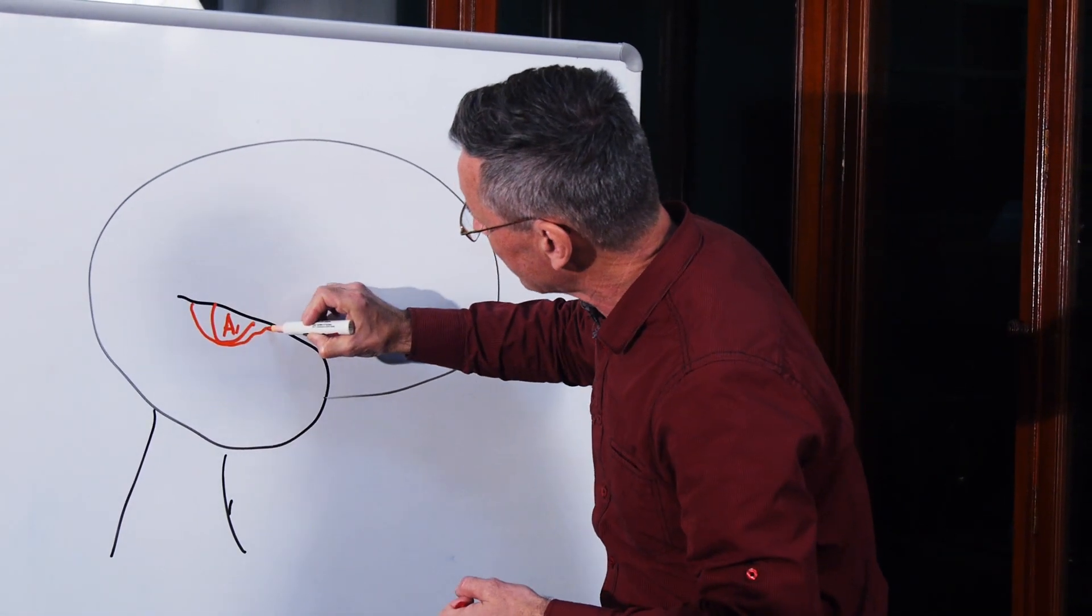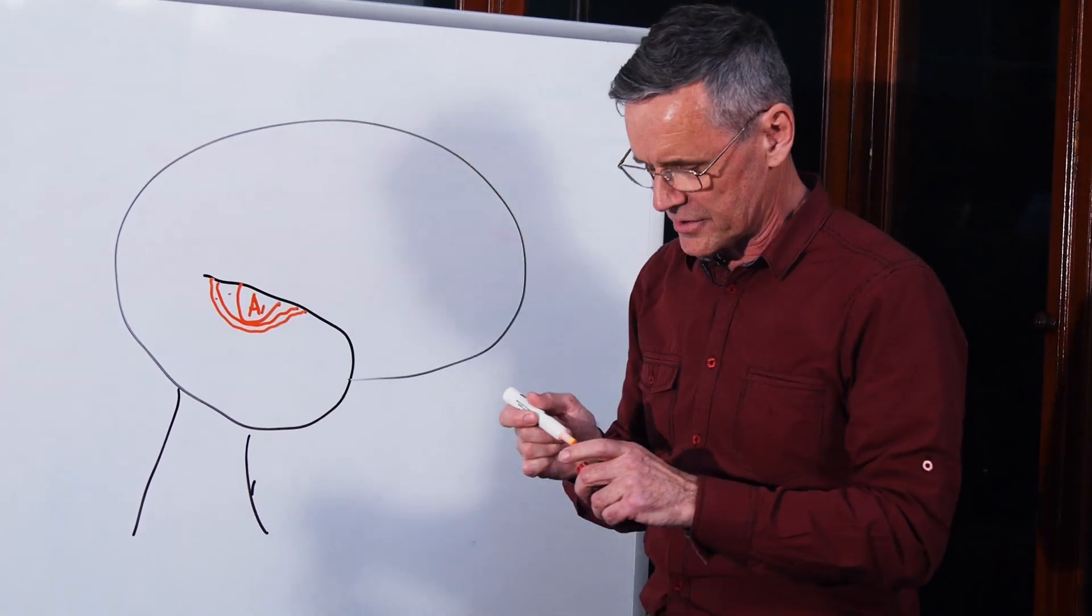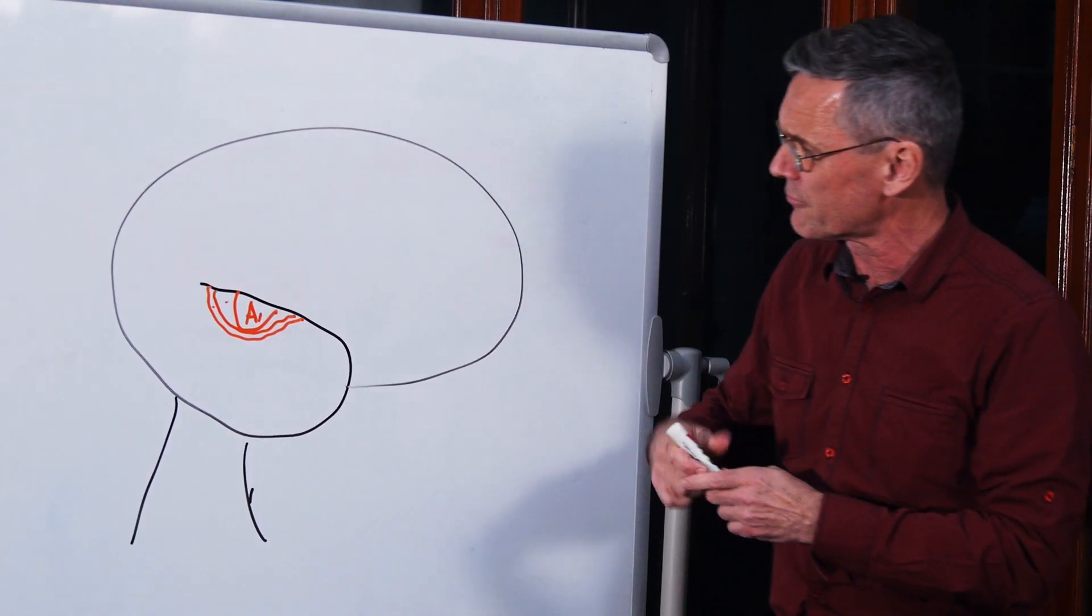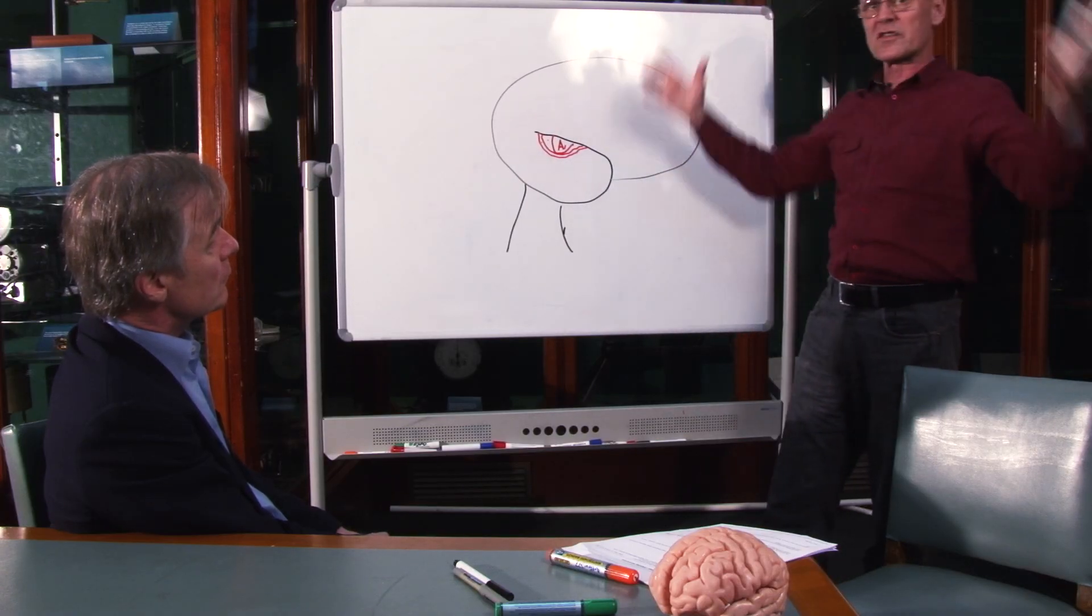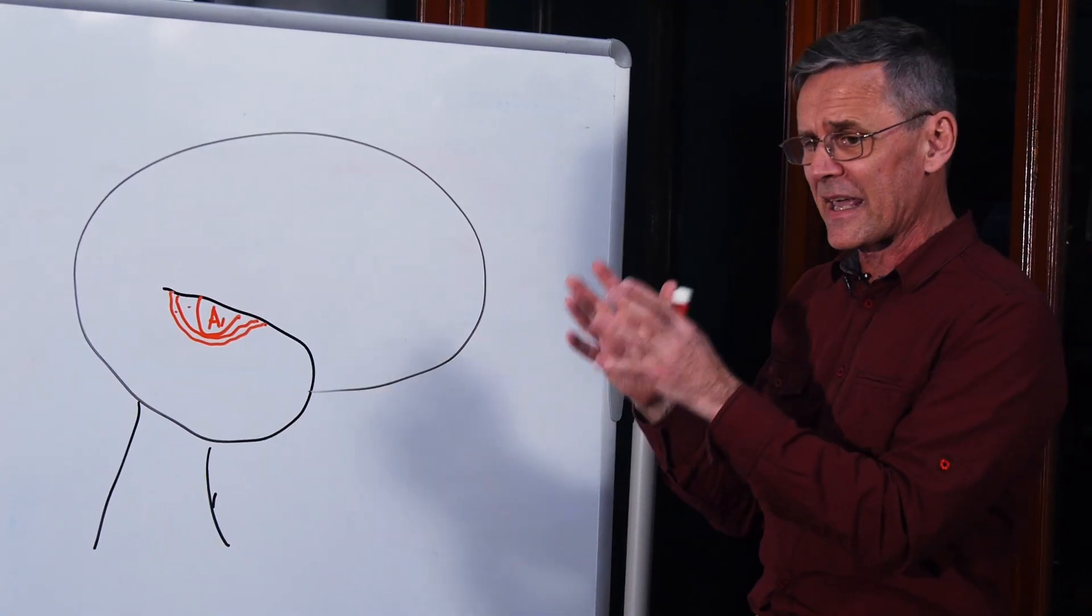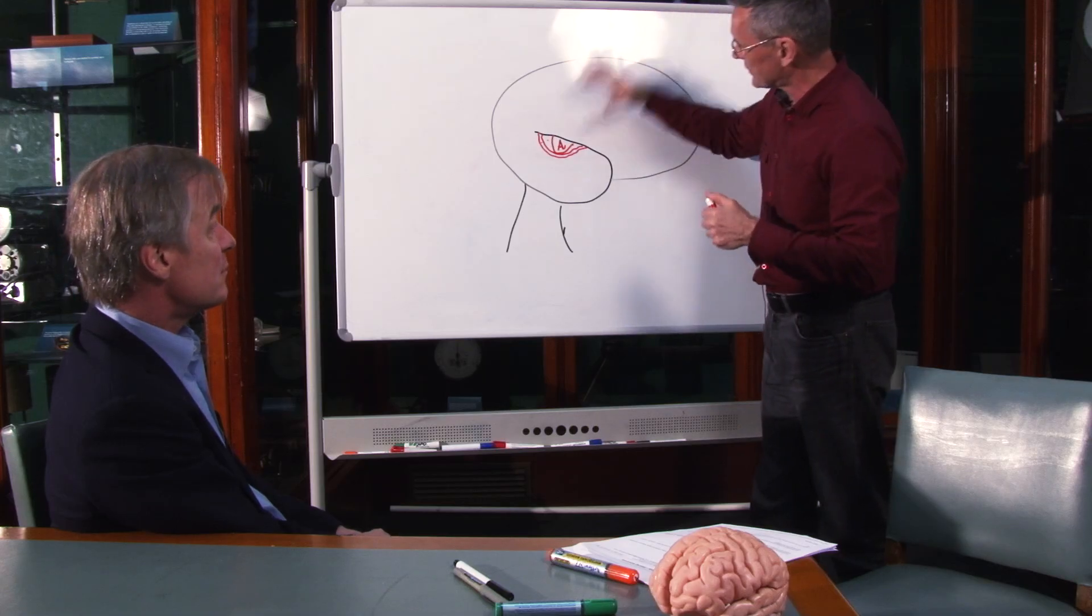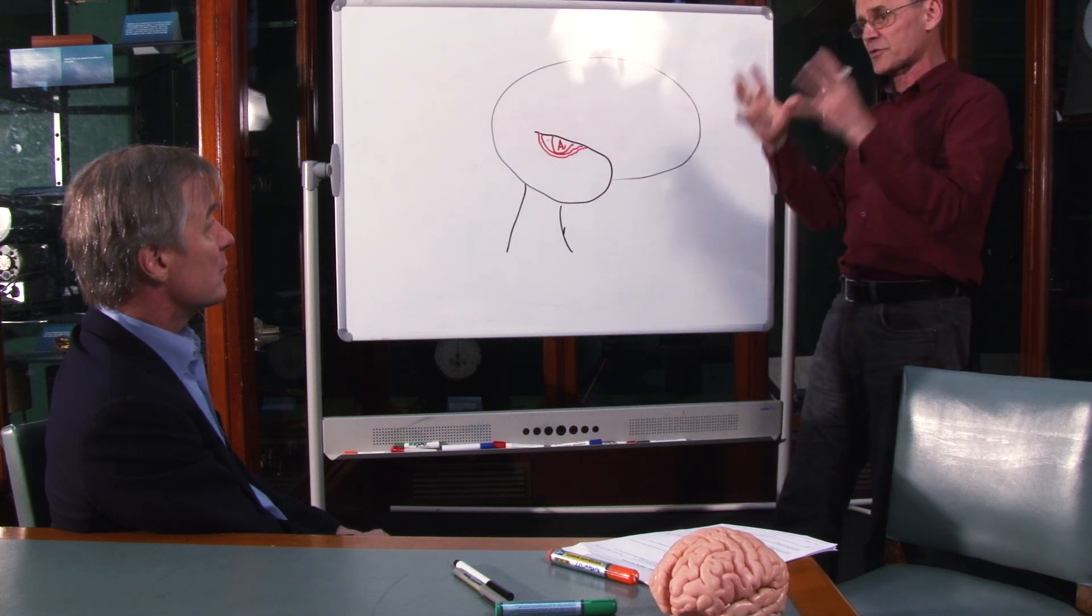When you start moving outside auditory cortex, to what are referred to as the belt and parabelt regions, something magical really begins to happen in that this representation of the acoustic space starts to become pared down to the things that you want to focus your attention on. So the top-down endogenous action of attention sharpens up the imagery of the perceptual objects.